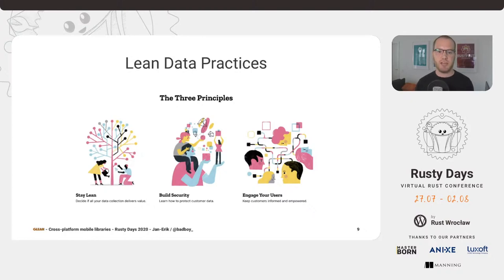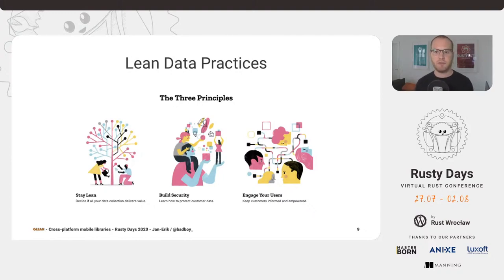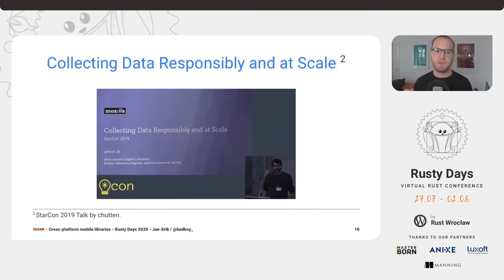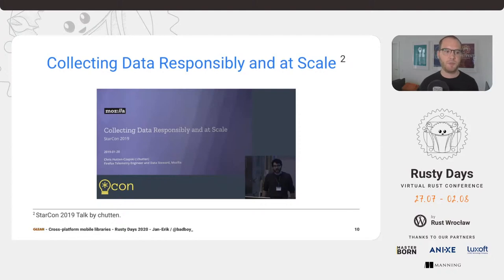Last but not least, we want to engage our users. Just as the Firefox codebase itself, the data collection code and how we do all of this is freely available. Users can look at what the browser does and what their browser specifically is collecting. Most importantly, we always make it easy and possible for the user to opt out of this and not send us data if they're not comfortable doing so. We have people that ensure every piece of data we collect follows these principles. If you're interested, check out the talk by my colleague Chatton titled 'Collecting Data Responsibly and at Scale' from StarCon 2019.